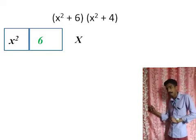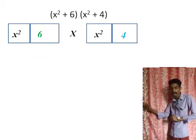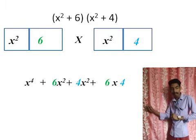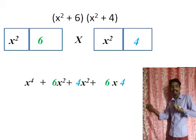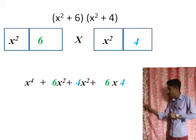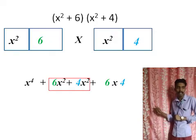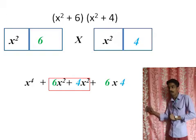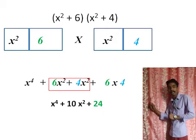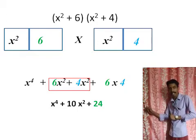The third example is (x²+6)(x²+4). We have two parts: the first part is x² and 6, the second part is x² and 4. x² times x² is x to the power 4. x² times 4 is 4x². Then 6 times x² is 6x², and 6 times 4 gives 24. Now we add: the like terms are 6x² and 4x², and 6 plus 4 is 10. The final answer is x to the power 4 plus 10x² plus 24.